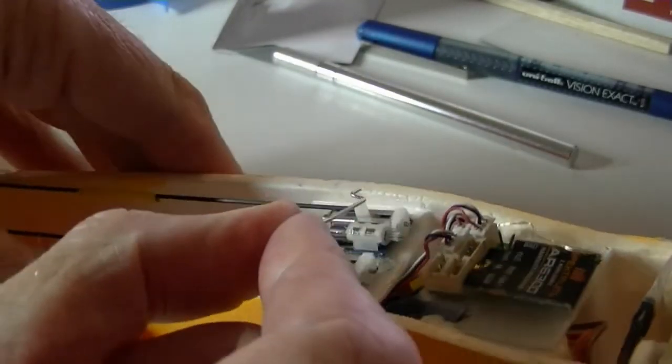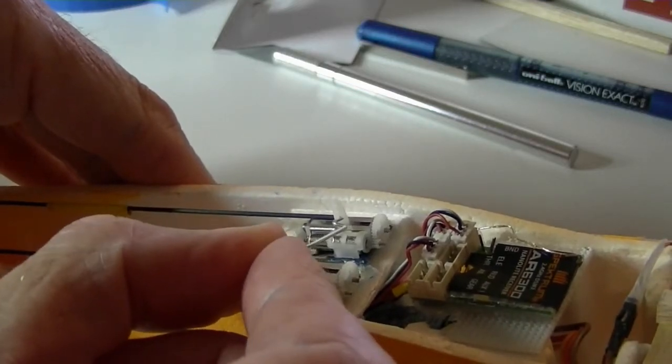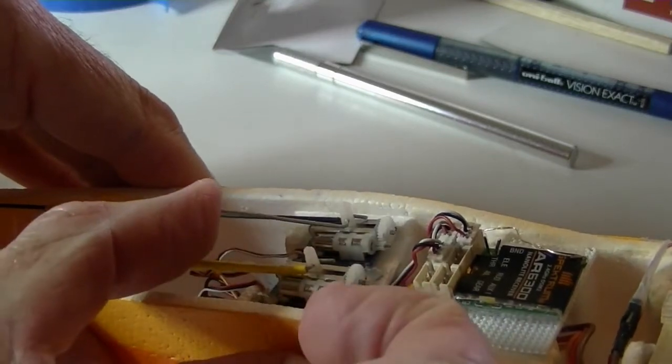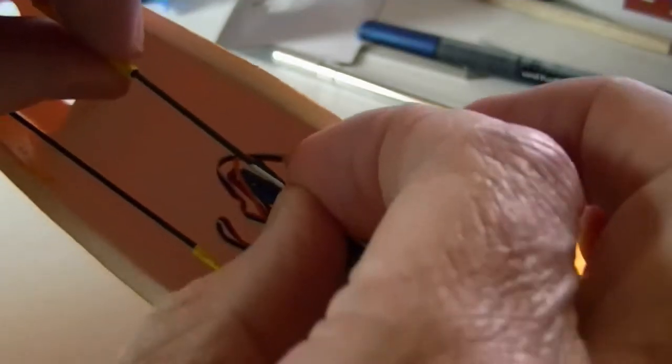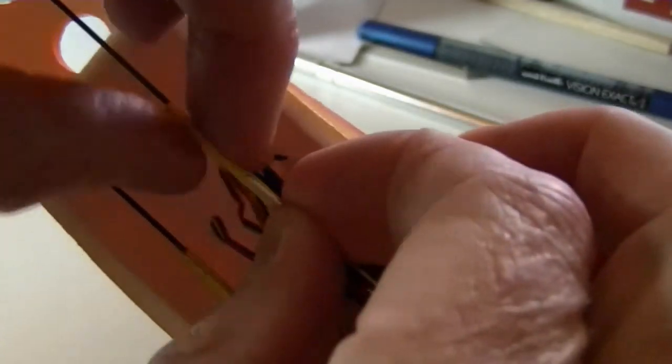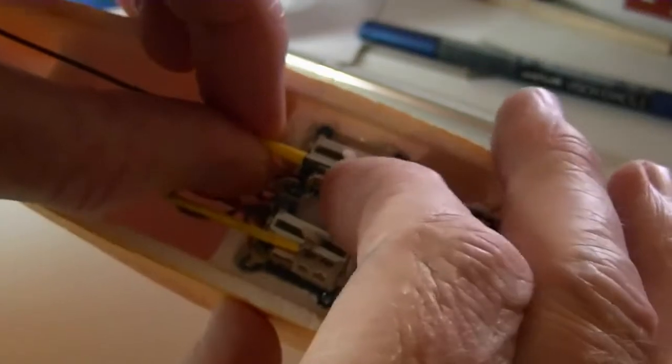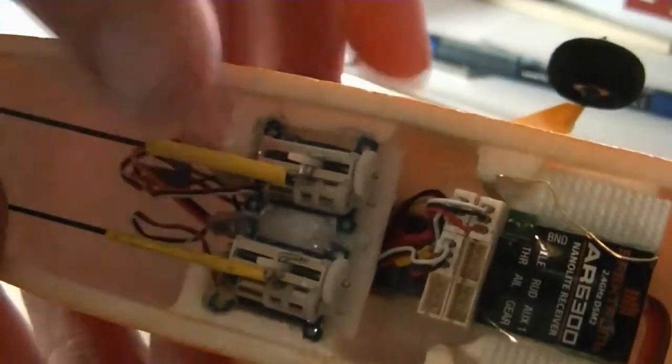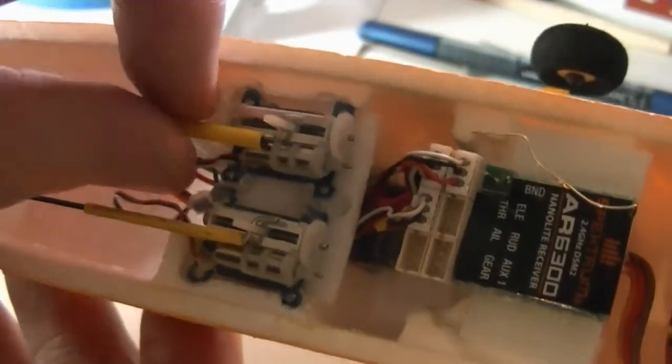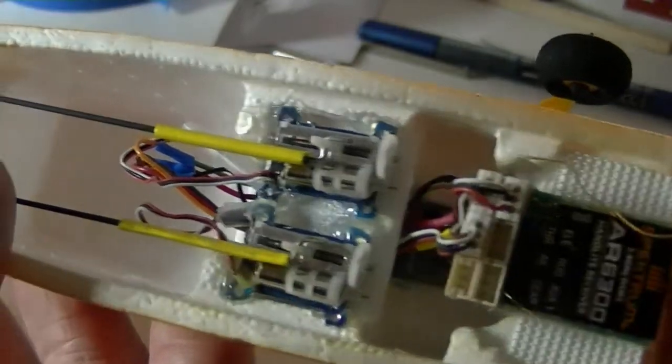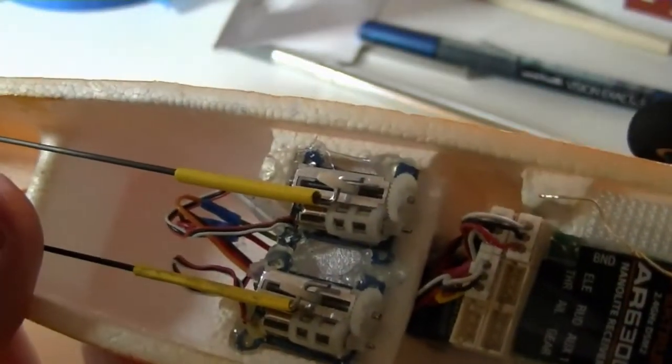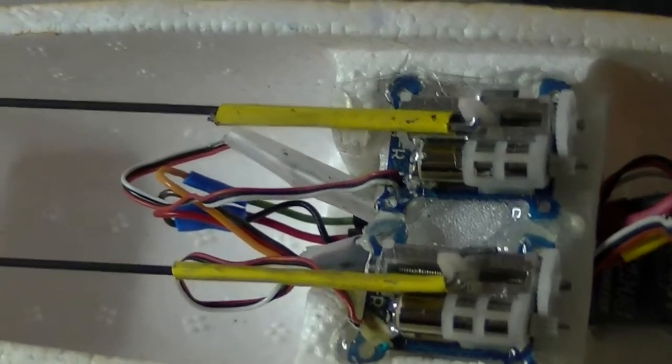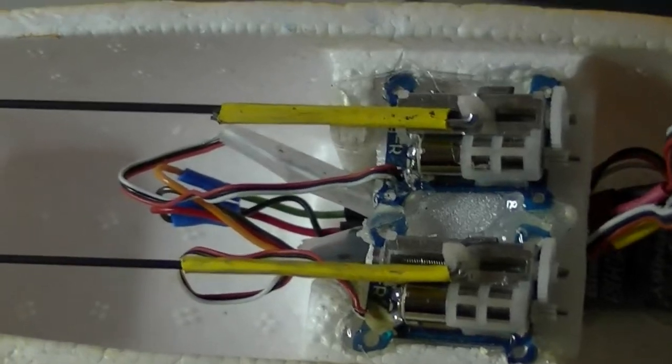What I'm going to do now is put this Z-bend into the servo horn here, bring the control rod up next to it and then slip it over. Once it's over there, I'm going to heat it up with a soldering iron, gently heated on all sides to shrink it, making sure that the elevator here is flat when I do it.